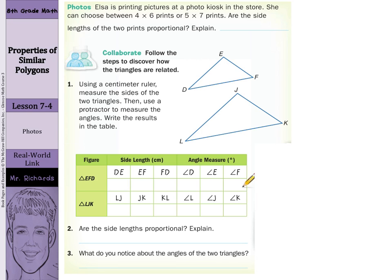Our real world link deals with photos. Elsa is printing pictures at a photo kiosk in the store. She can choose between 4x6 prints or 5x7 prints. Are the side lengths of the two prints proportional? If we compare 4 over 5 to 5 over 7, those are both simplified, and the ratios aren't equal. So this answer is simply no, because 4 fifths is not equal to 5 sevenths.